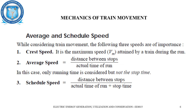Let us consider the speeds referred to in the mechanics of train movement: crest speed, average speed, and schedule speed. Crest speed is the maximum speed attained by the train during running. Average speed is the distance between adjacent stops divided by the actual time of run — only the running time is considered, not the stop time. Schedule speed is the distance between stops divided by the actual time of run plus the stop time, giving the total speed for the entire run of a train from one place to another.